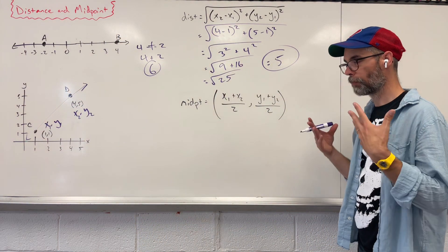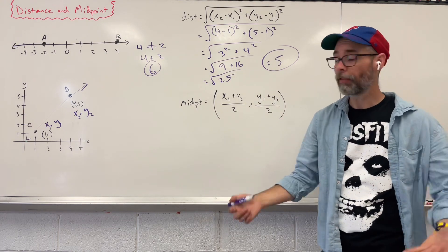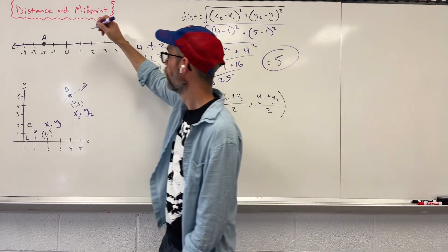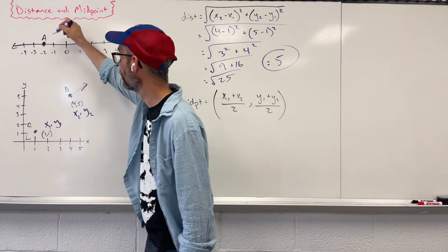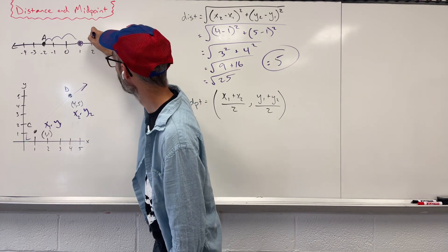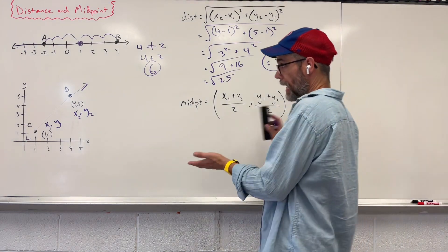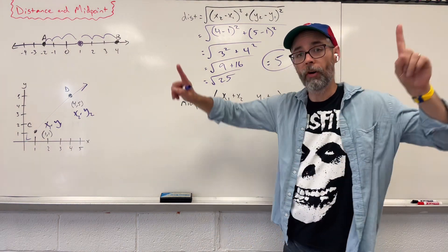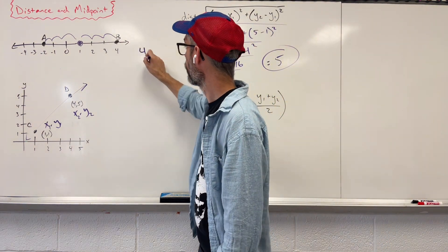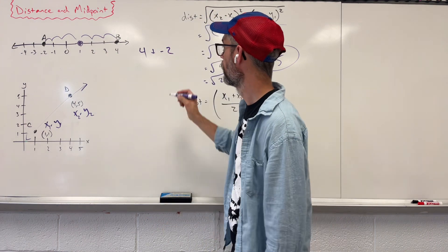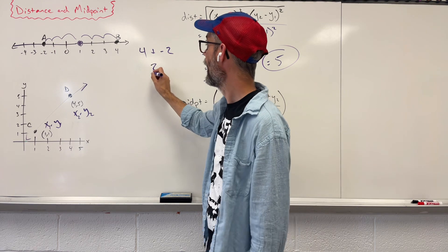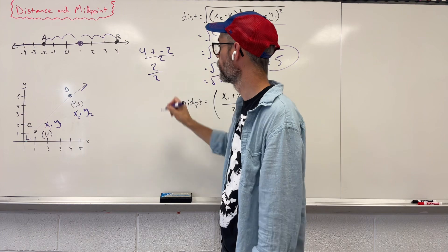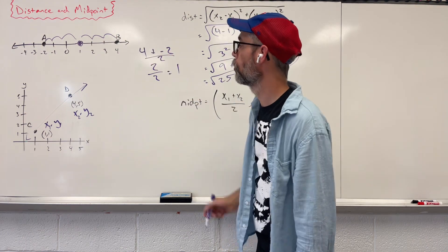Now we've got something called midpoint. Midpoint is the middle of that line. So again, if we go back to our first picture, from A to B, what's that middle point? Well, that middle point's going to be at 1 — we could count 1, 2, 3 from each side; they have an equal distance out. Or you could find the average of our two points A and B. I could say 4 plus negative 2; when I add them together I get 2, then divide by 2. The average of those two coordinates is 1.